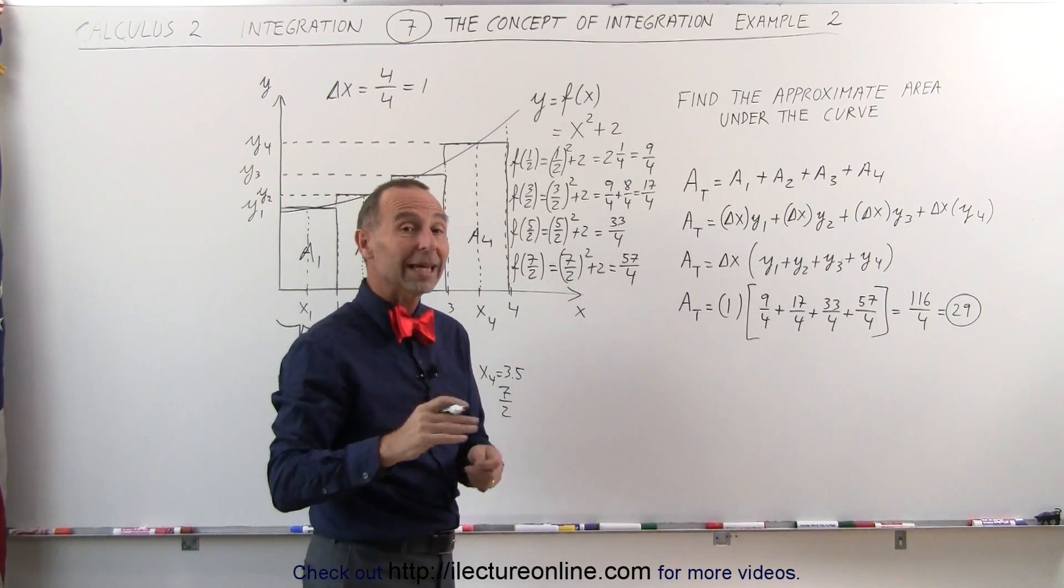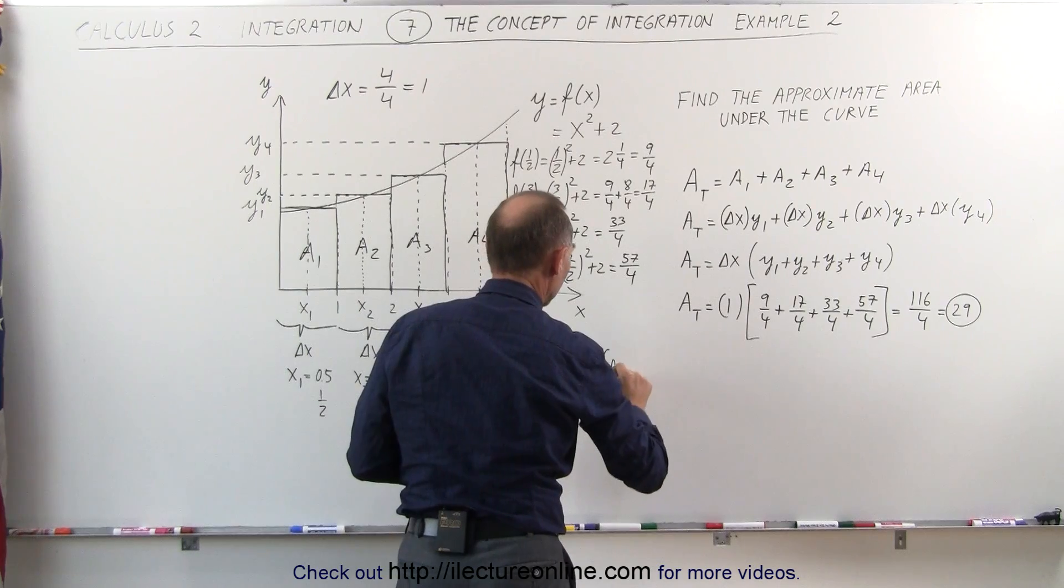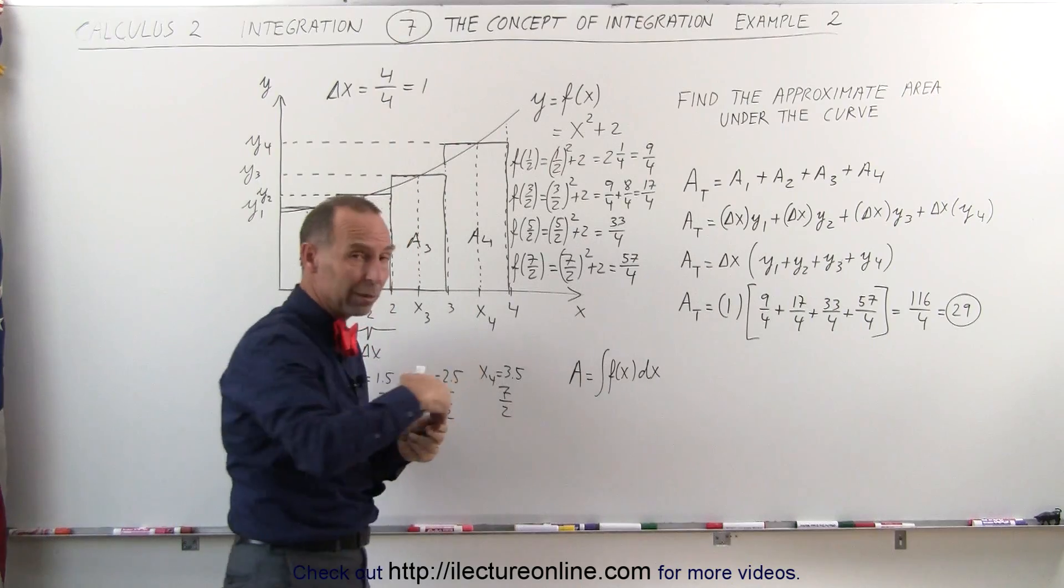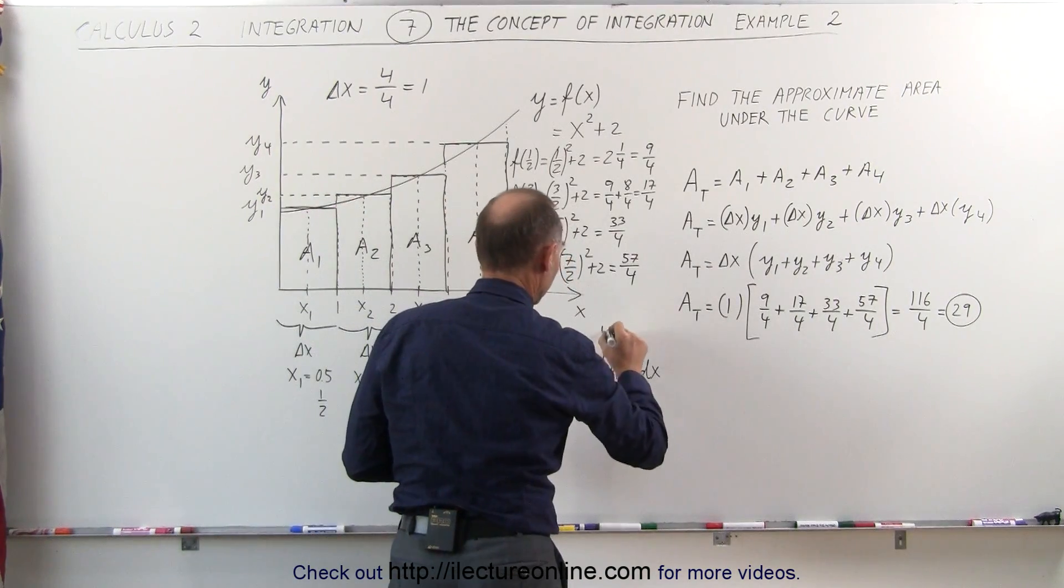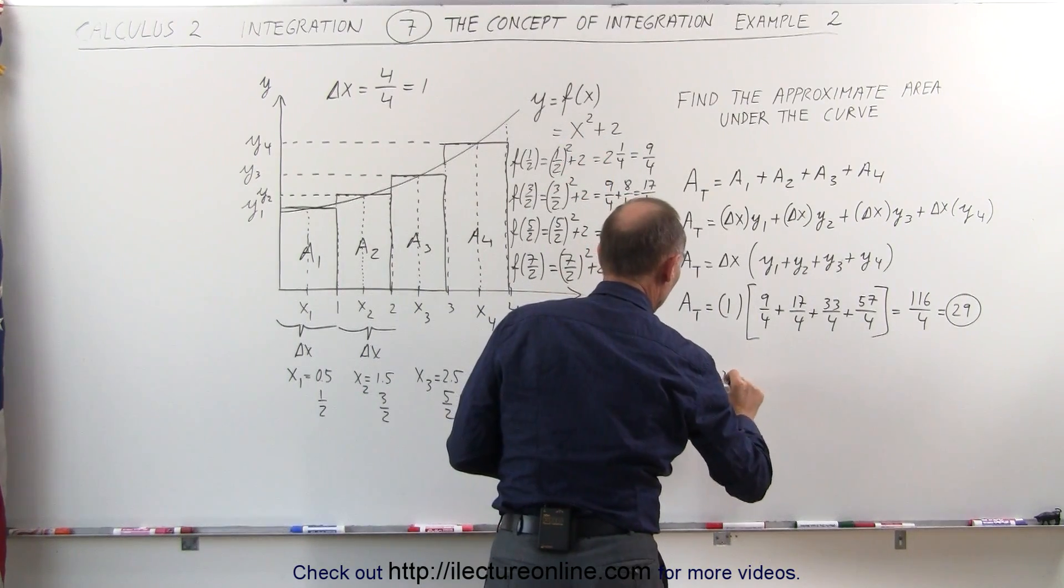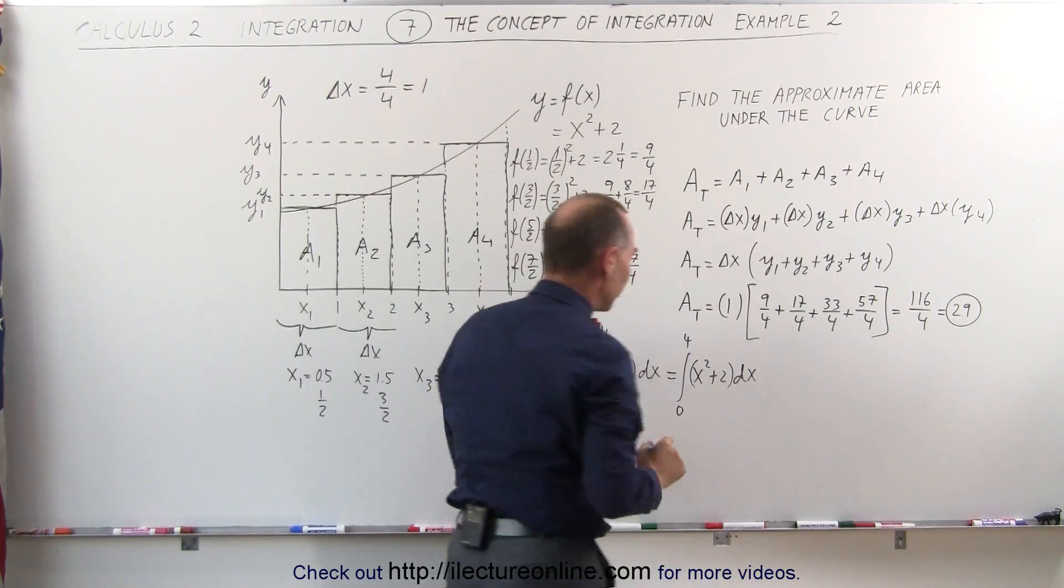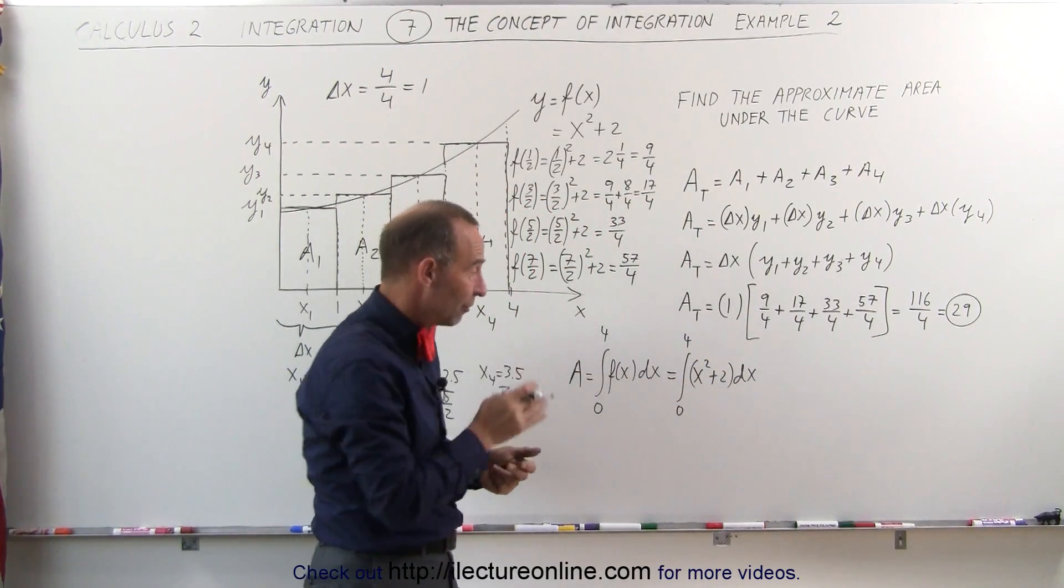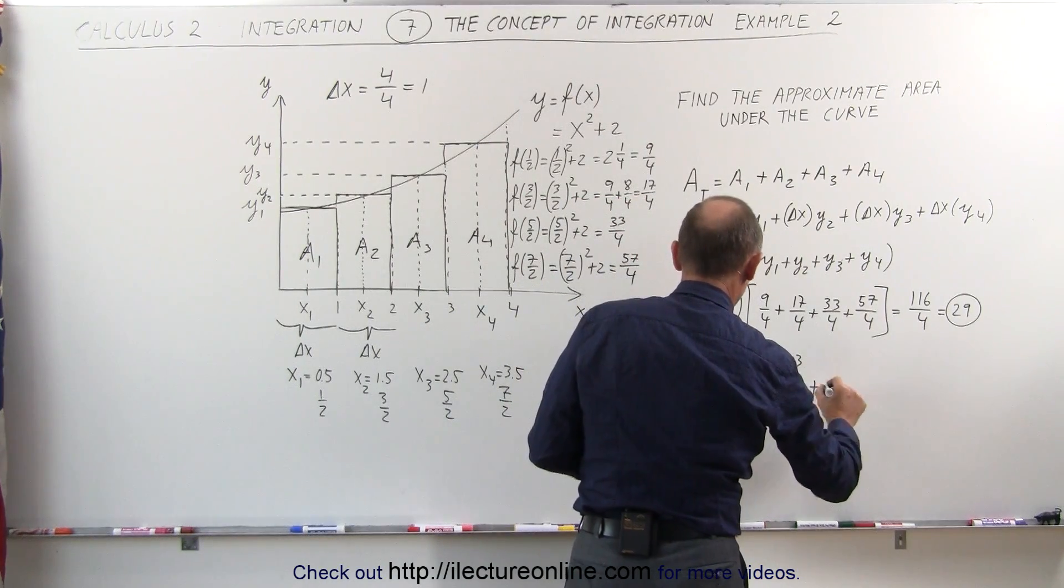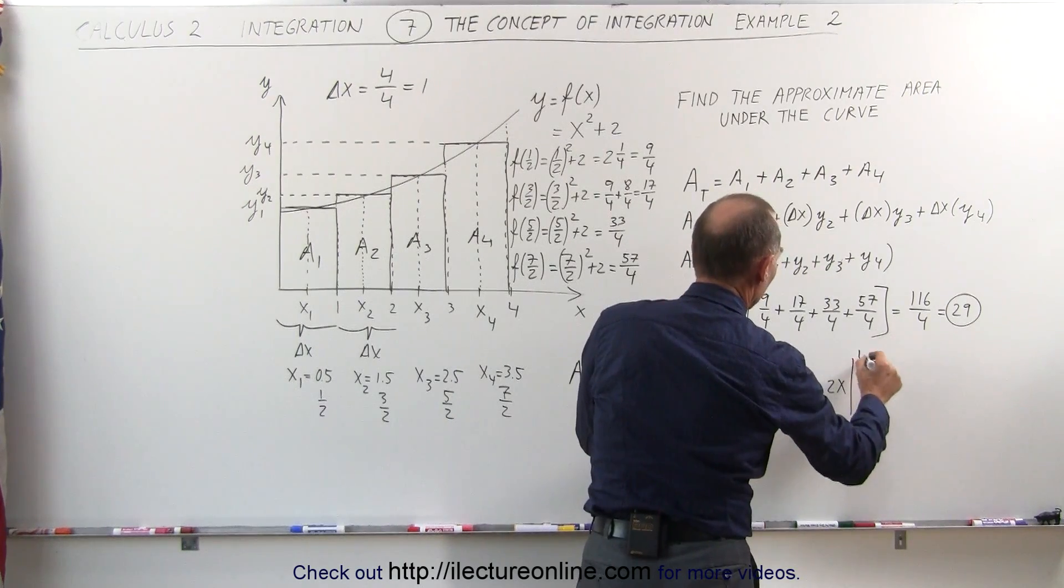Now let's go ahead and use the integration. We can say that the exact area is equal to the integral of the function of x times dx, evaluated from the left limit to the right limit, or the lower limit to the upper limit, which is from 0 to 4. That would be the integral of the function, which we said was x squared plus 2, times dx, from 0 to 4. If we integrate this, remember we add 1 to the exponent, divide by the new exponent, this is equal to x cubed over 3 plus 2x, evaluated from 0 to 4.